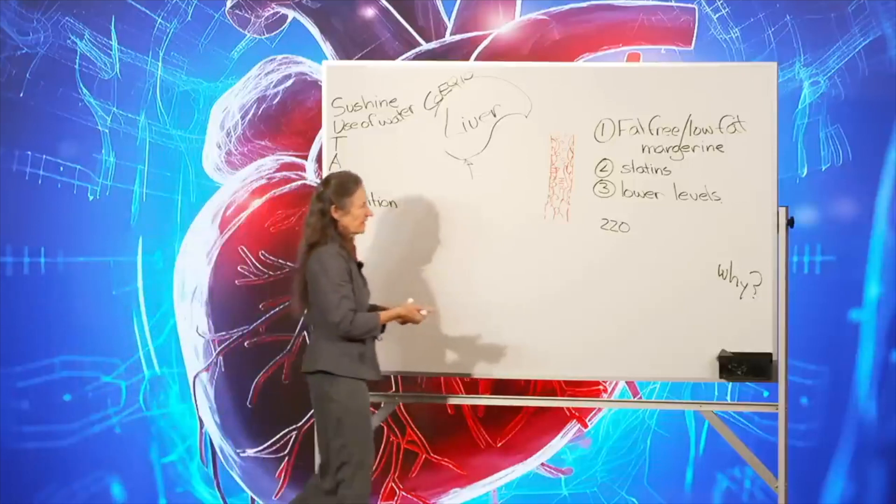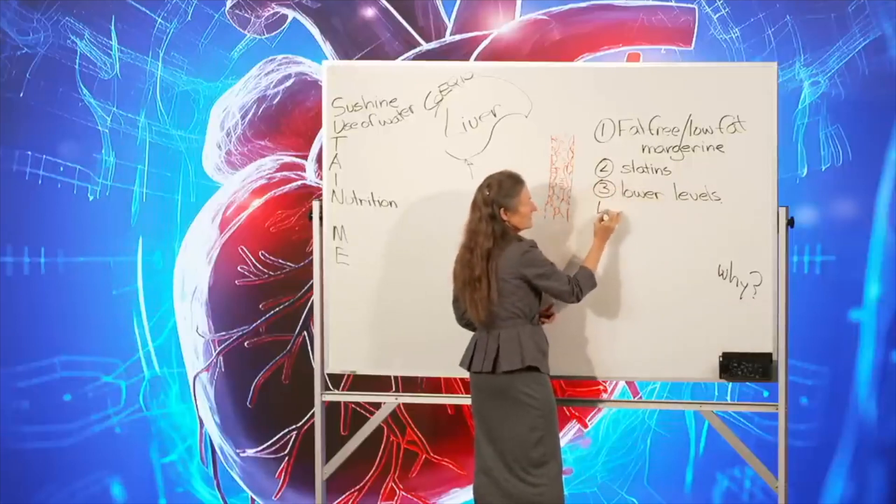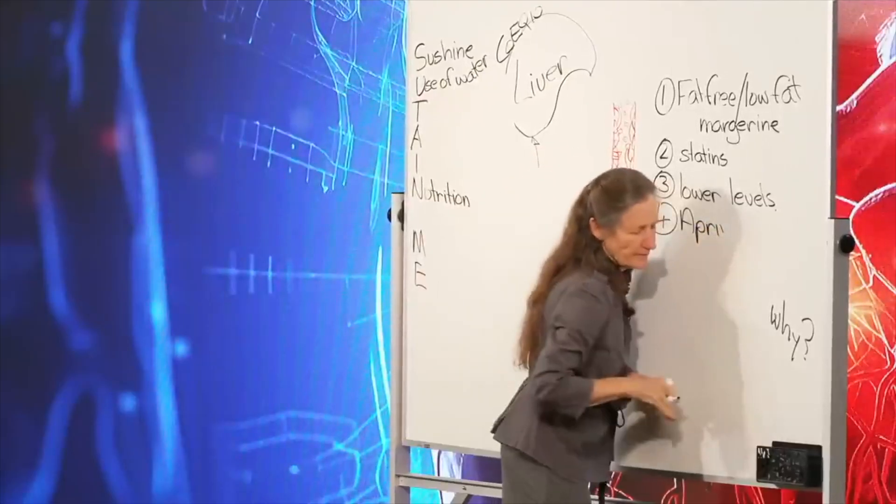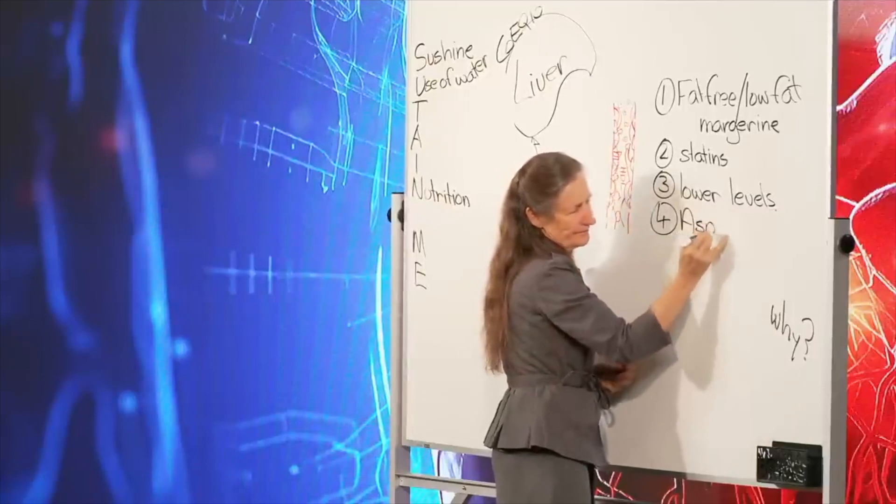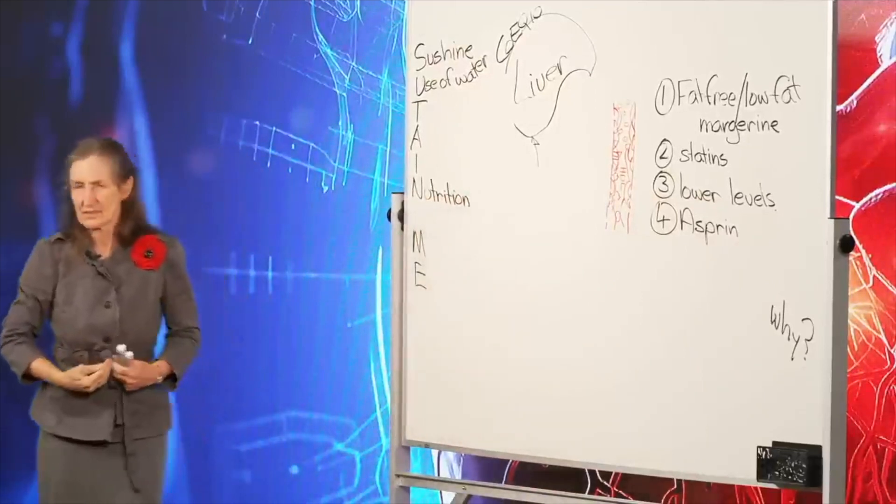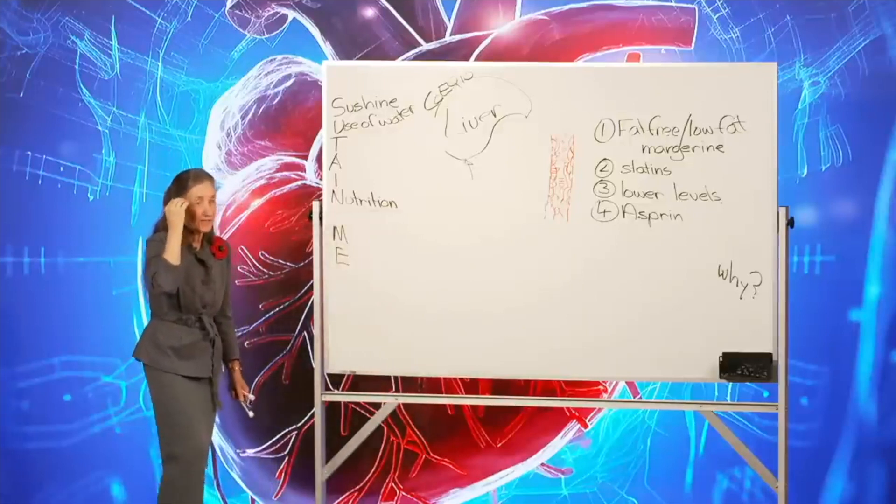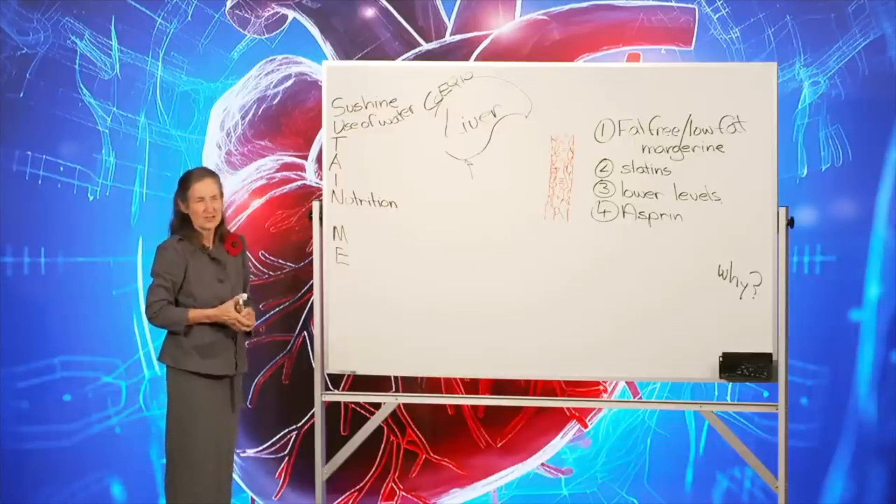Now, one other thing that they have done in an attempt to lower heart disease is put everyone over the age of 50 on aspirin. Does that work? No. The number one cause of stomach ulcers is aspirin because it causes the stomach to bleed. But they've found a few more things out about aspirin. It's causing eye bleeds and it's causing brain bleeds. Eye bleeds means deterioration of eyesight. Brain bleeds means deterioration of brain function. Drugs never cure disease. They just change the form and location.